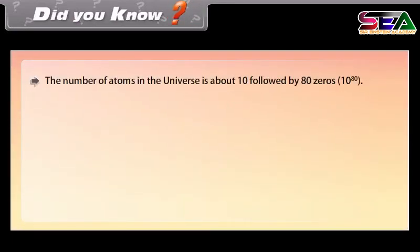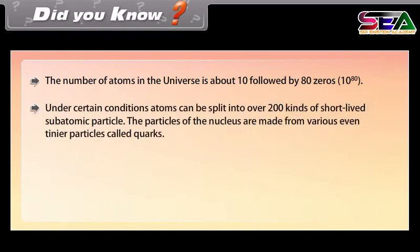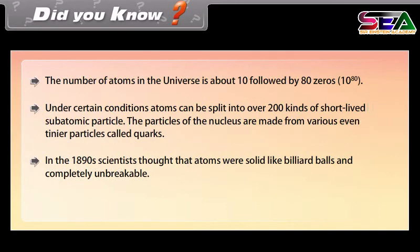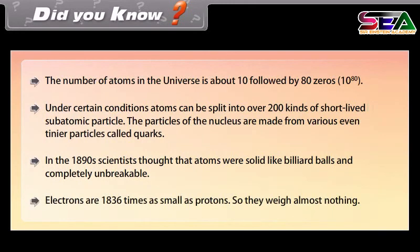Did you know: The number of atoms in the universe is about 10 followed by 80 zeros. Under certain conditions, atoms can be split into over 200 kinds of short-lived subatomic particles. The particles of the nucleus are made from even tinier particles called quarks. In the 1890s, scientists thought that atoms were solid like billiard balls and completely unbreakable. Electrons are 1836 times as small as protons, so they weigh almost nothing.